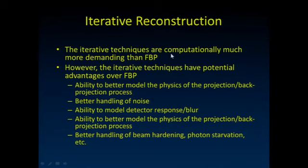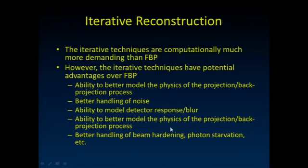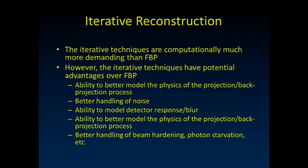Iterative reconstruction is computationally much more demanding than filtered back projection, so why use it? Because it allows us to better model the physics of the projection-back-projection process, better handle noise, model blurring in the detector, and better handle processes that actually occur but which filtered back projection assumes don't—like beam hardening and photon starvation. Iterative reconstruction is here to stay. How many people in the room have switched away from filtered back projection? There are a few hands—my guess is that percentage will continue to go up year over year.